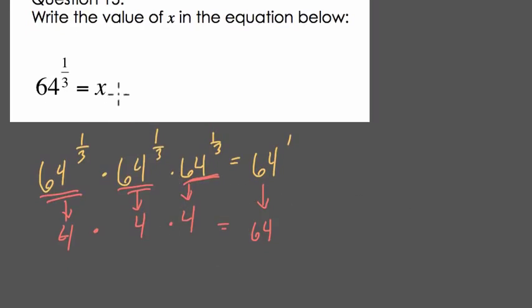Well, that means that here, x is 4. And it also means that 64 to the one-third represents what's called the cubed root, or third root, which we sometimes write like this, with a little 3 in there.